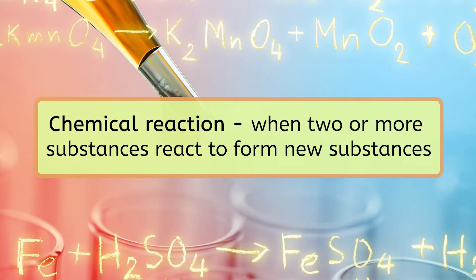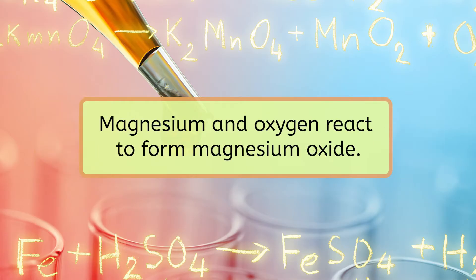A chemical reaction is when two or more substances react to form new substances. For example, magnesium and oxygen react to form magnesium oxide. However, sometimes a chemical reaction is more involved and includes a lot of different substances. To make chemical reactions more user friendly, chemists use chemical equations.